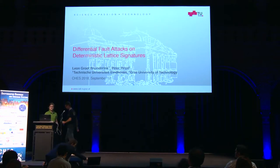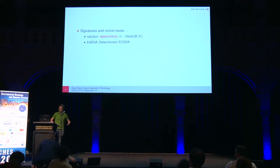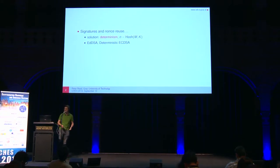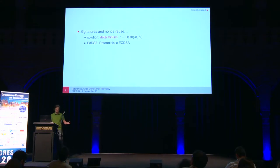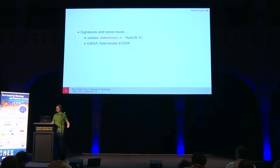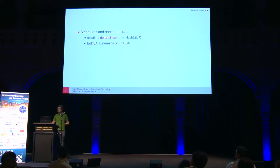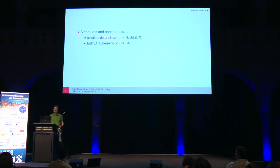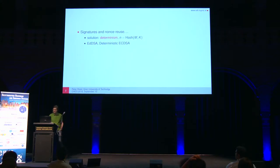It's probably not a well-kept secret anymore that many digital signature schemes are susceptible to nonce reuse. If you sign two different messages using the same nonce, you can easily recover the secret key, and this has happened in the past. A solution is to make the signature scheme completely deterministic: instead of using a random nonce, you derive it by hashing the message M together with some secret key. That's already done in EdDSA and deterministic EC-DSA.